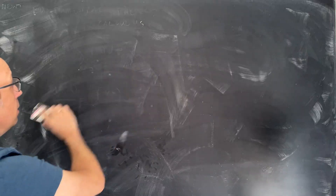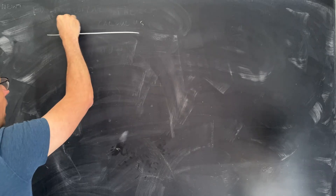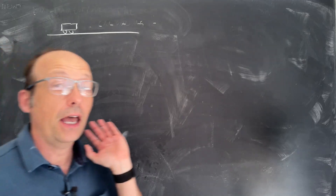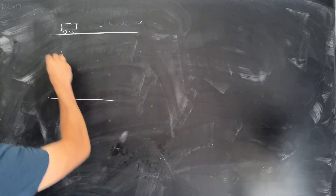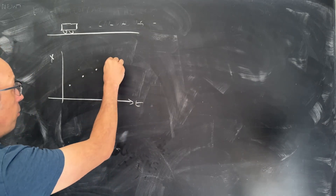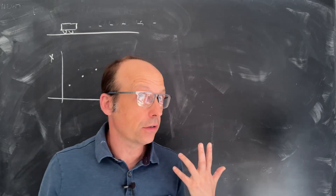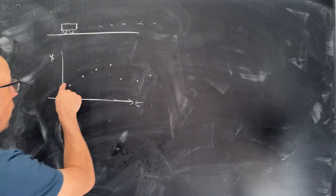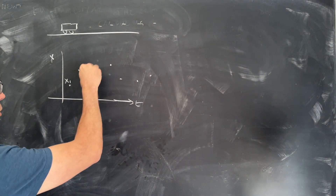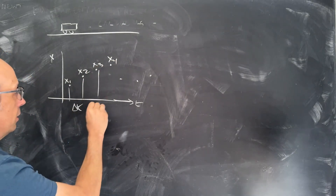Let's imagine I have a car. Let's talk about the derivative first. I have a car moving along in one dimension, so I have x data. Suppose I collect x as a function of time — data points x1, x2, x3, x4, and so forth, all separated by the same delta t intervals.